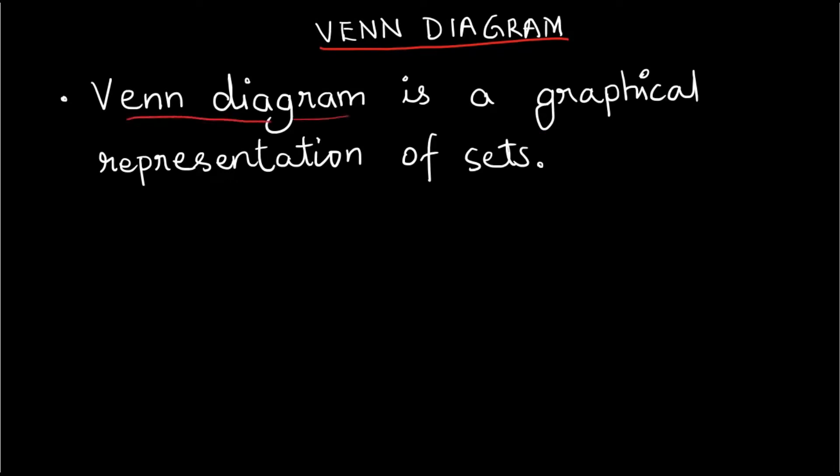Venn diagram is a graphical representation of sets. All sets come from a universe called the universal set and represented by the letter U. This universal set contains all the elements with some common attribute that we want to study.